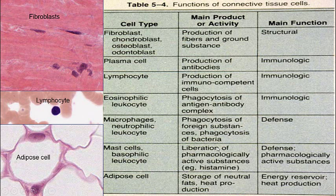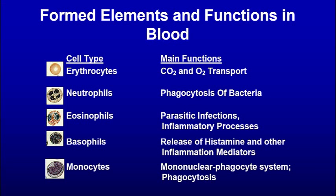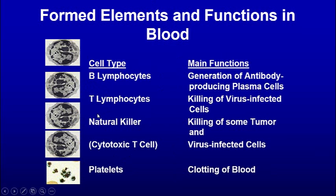Here we see mast cells, eosinophil, and other cells. Fibroblasts — you can see lots of collagen bundles between the nuclei and a little cytoplasm. Plasma cells, lymphocytes, eosinophil, macrophage, mast cell, adipose cell — the main product they have and their main function. It would be useful to know some of these. Foreign blood elements: red blood cells, neutrophils, basophils, monocytes and what they do. Lymphocytes could be T or B cells, could be killer cells, and then you can have platelets as well.